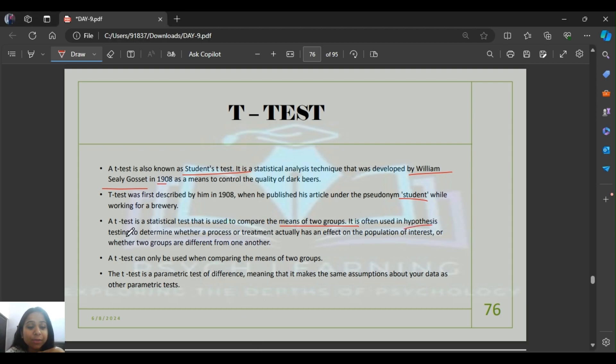It is often used in hypothesis testing to determine whether a process or treatment was useful or not. For example, if I provide chocolate to one group after tests and nothing to another group, then compare their marks, T-test helps determine if the treatment had any impact. T-test can only be used for two groups.